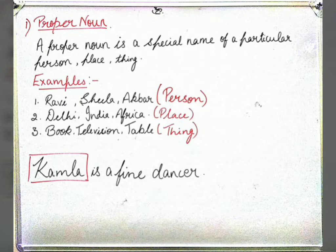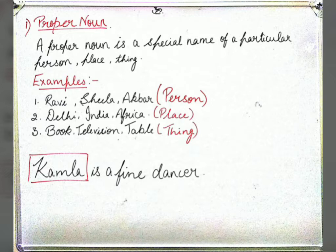If we are talking about a particular book — for example, I want to read a novel by a specific name — then that book is a proper noun. But if we say generally 'I want a book,' then book becomes a common noun. For example: Kamla is a fine dancer — here Kamla is a proper noun as it is someone's particular name.